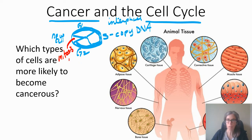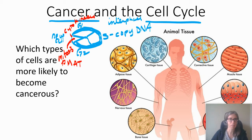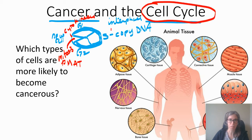Mitosis is split into four phases: prophase, metaphase, anaphase, and telophase, and then there's cytokinesis right at the end. Mitosis is splitting the nucleus, and cytokinesis is splitting the cell itself. We already did a unit on that, and now we're talking about regulation of this cell cycle.